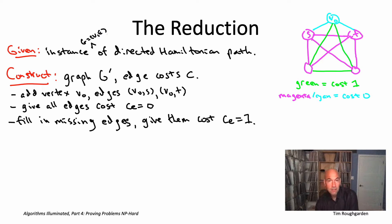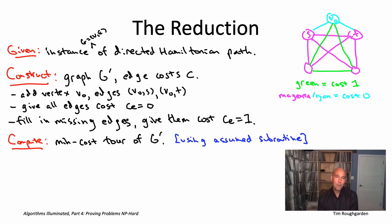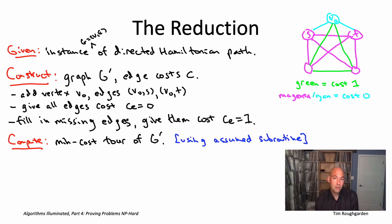Now that we have a complete graph G prime with committed edge costs — cost one for the green edges added in the last step, cost zero for edges present in the original undirected Hamiltonian path instance or the two extra edges incident to V-naught — we feed this into the assumed TSP subroutine. It hands us back a minimum cost traveling salesman tour: either total cost zero using only zero-cost edges, or cost one or more if it uses at least one green edge. That's the clue telling us whether the original graph had a Hamiltonian path.